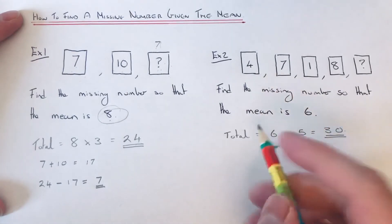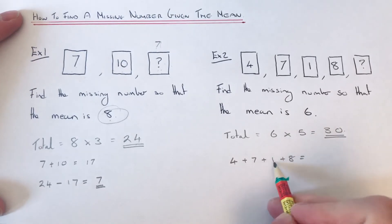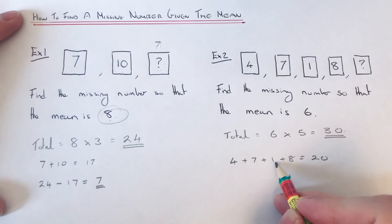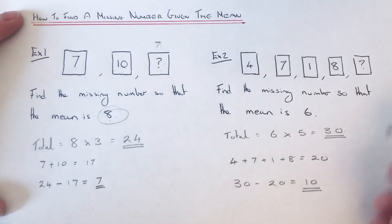If we add up the four numbers that we've already got, this gives us 20. Then we just take that off the 30. So 30 take away 20 is 10. So 10 is our missing number.